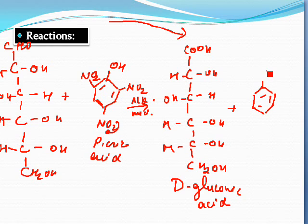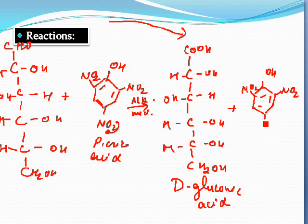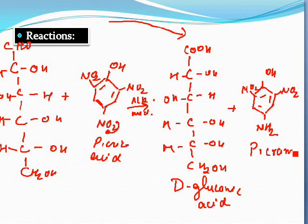In D-gluconic acid, the structure is the same except that the NO₂ group at the six position is changed into an NH₂ group — rather than a NO₂ group as in picric acid — and this product gives the characteristic red color.